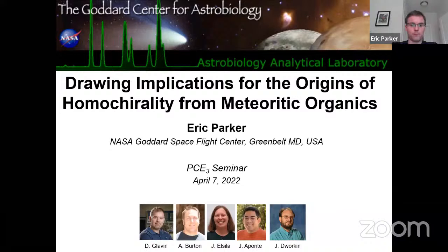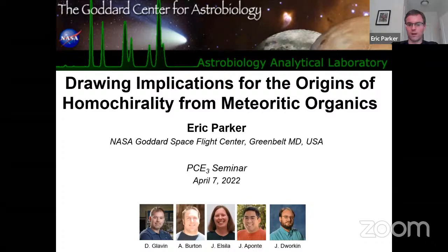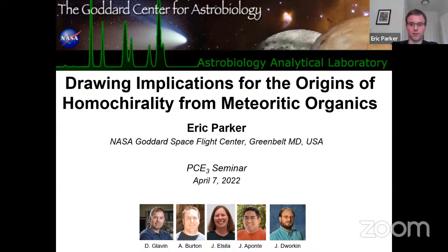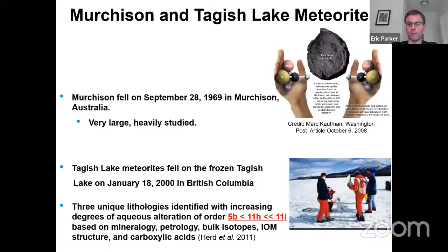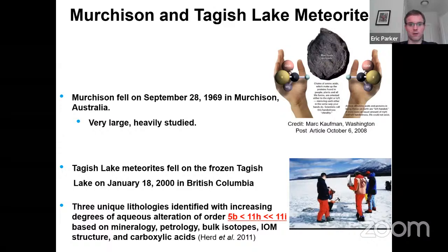Thanks, Danielle. Before I continue, I want to give proper credit to the current and former members of the Astrobiology Analytical Lab, who've been heavily involved in this research. I want to credit Danny Glavin, Aaron Burton — who's now at Johnson Space Center — Jamie Elsila, Jose Aponte, and Jason Dworkin. Danny left us off talking about how meteorites have implications for enantiomeric excesses. I want to focus on two meteorites to give a snapshot of how meteorite studies can help us better understand possible origins of homochirality: the Murchison meteorite and the Tagish Lake meteorite.